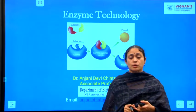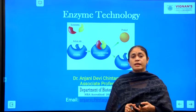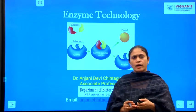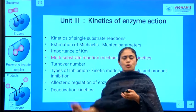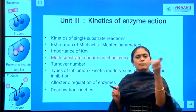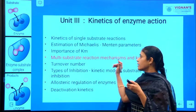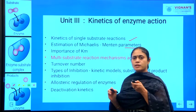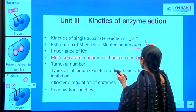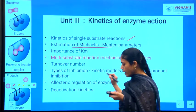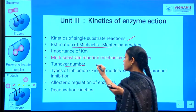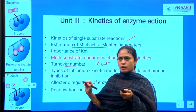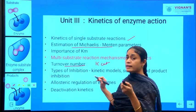We are presently dealing with Unit 3 of the Course Enzyme Technology. In the last classes, we studied the kinetics of single substrate reactions and learned how to estimate the important Michaelis-Menten parameters KM and Vmax. We also learned about the turnover number Kcat and had a discussion on catalytic efficiency, which is Kcat divided by Km.